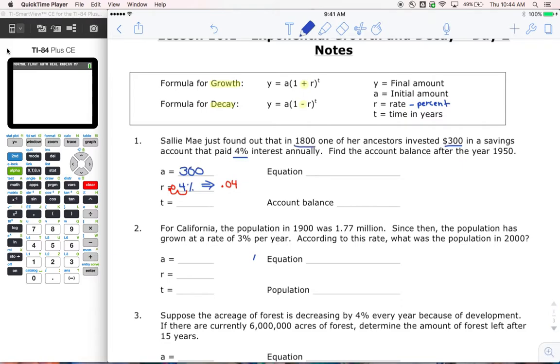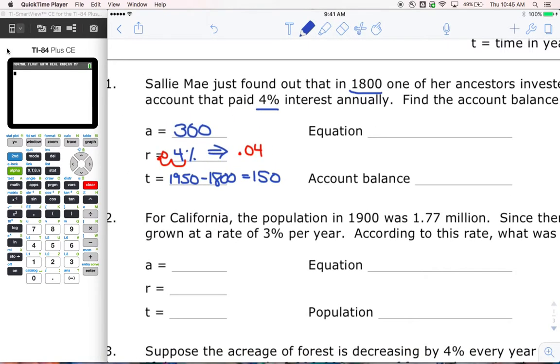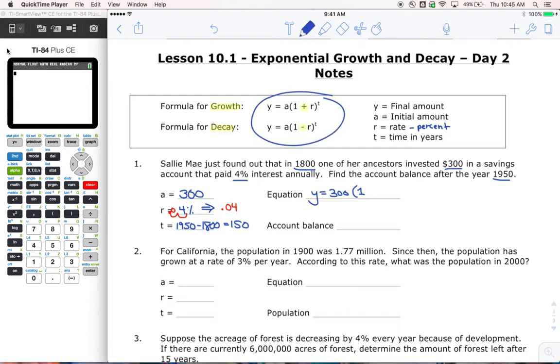So we're going to end up with 0.04 and that's what we're going to use for R. Now time, how much time has passed? Think about it - 1800 was when we started this account, now we're looking at 1950. How many years is that? 1950 minus 1800, we're using 150 to find this amount. So let's write our equation here. We've got Y equals, my initial amount is 300, I've got a 1. Now I have to decide, is it going to be a plus or a minus? It's interest, we're earning interest, so we have to use a plus sign.